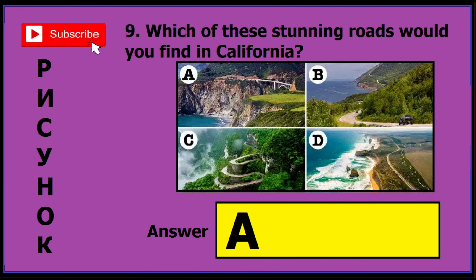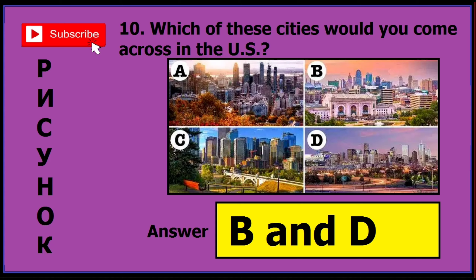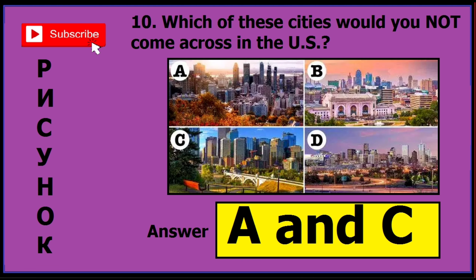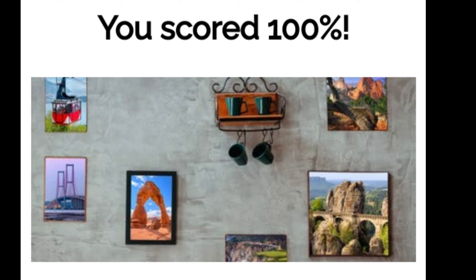Question nine is simple — it has only one version, so the correct answer is A and you don't need to worry. The next question has two different versions. In version one, it asks 'which of these cities will you come across in the US?' and the correct answer is B and D. In version two, it asks 'which of these cities would you not come across in the US?' and the correct answer is A and C. I hope you got a 100% score — thanks for watching, please like, subscribe, comment, and share.